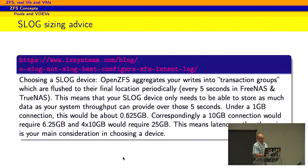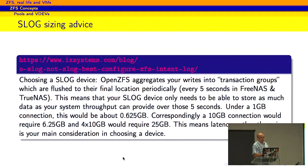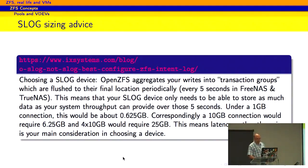The advice there is it's a 5-second or 10-second period depending on your transaction group sizes. If you look at the usual 5 seconds and 1 gigabit of data that you consume, you need 0.6 gigabytes of data for the ZIL. Anything more than that and you'll be wasting space on the ZIL log.